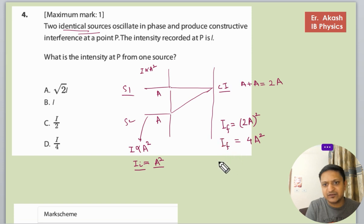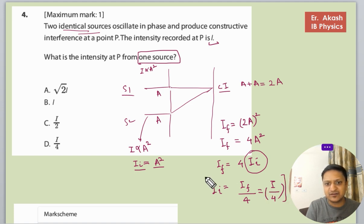So we need to calculate what is the intensity at P from one source. We need to calculate the initial intensity, so I initial will become I final upon 4. And I final, the intensity recorded at P is I, so it is I by 4. So this is the direct solution.